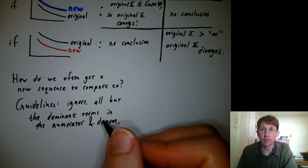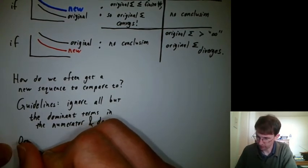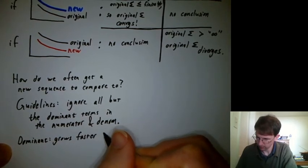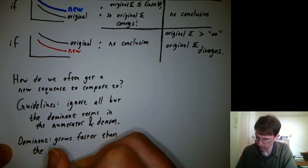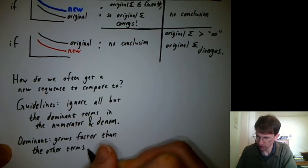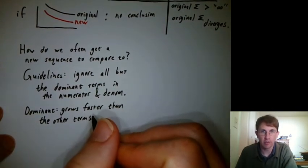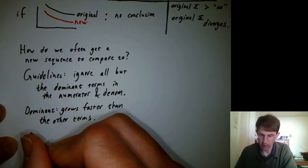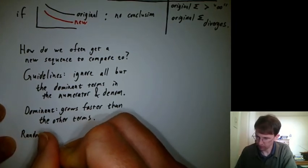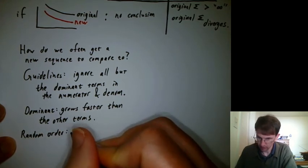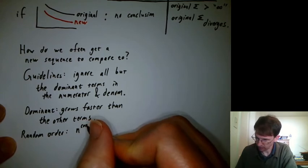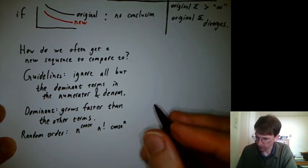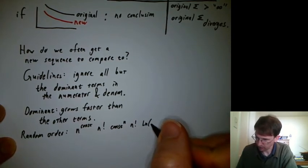So what does it mean to be dominant means grows faster than anything else. And we've already talked about this in the homework, but it's good to list it again. Let's make a list of, let's just say, I'll do this in random order, and you can try to remember what order they go in. Let's say n to a constant, n factorial, constant to an n, n to the n, and log n.